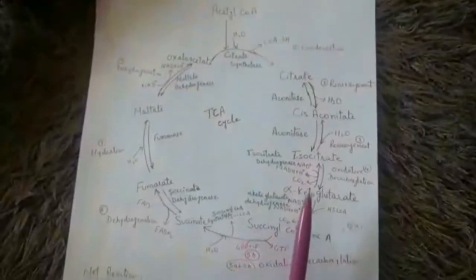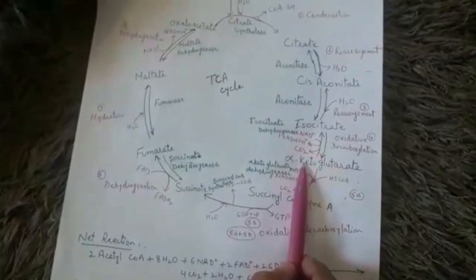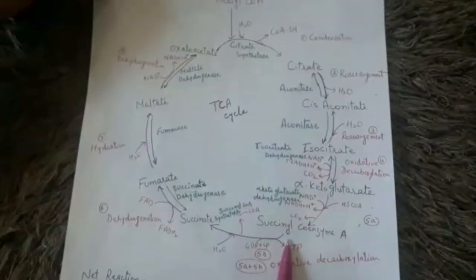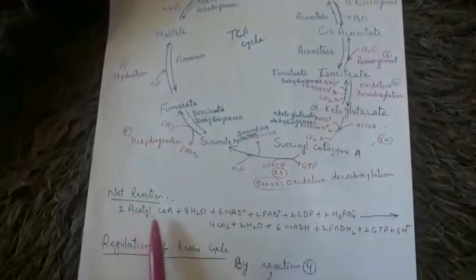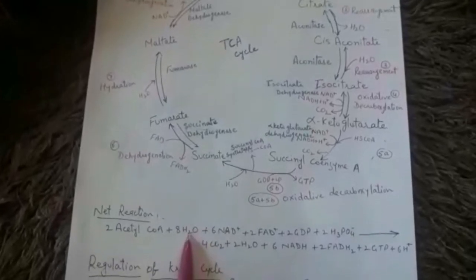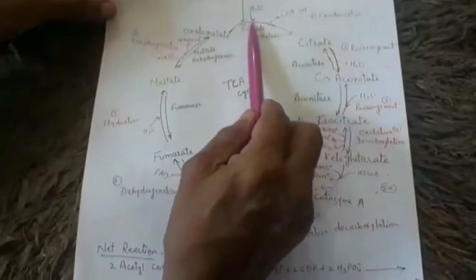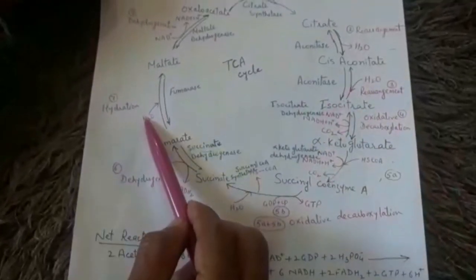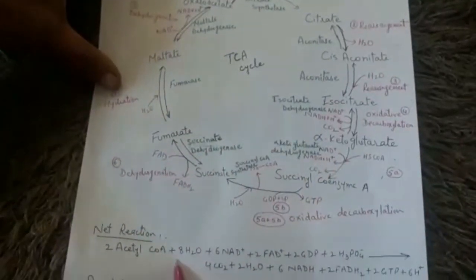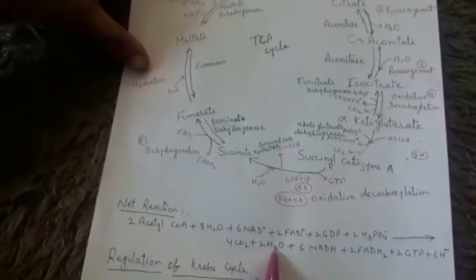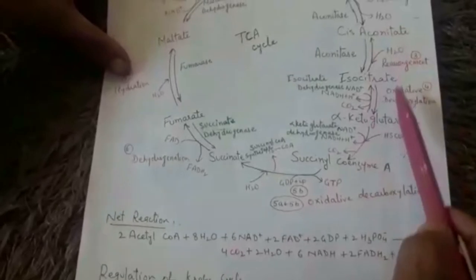Ultimately, acetyl coenzyme A through this cycle breaks down to form carbon dioxide and water. Since we have two acetyl coenzyme A molecules, we calculate net gain with respect to two. We take two acetyl coenzyme A and eight water molecules are used — four water molecules per turn multiplied by two cycles — and two water molecules are produced.